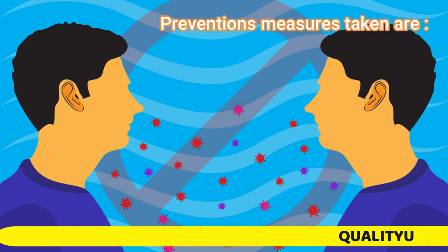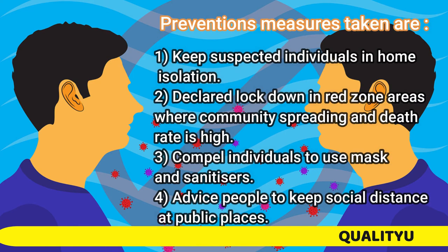Prevention measures taken are: 1. Keep suspected individuals in home isolation. 2. Declare lockdown in red zone areas where community spreading and death rate is high. 3. Compel individuals to use masks and sanitizers. 4. Advise people to keep social distance at public places.